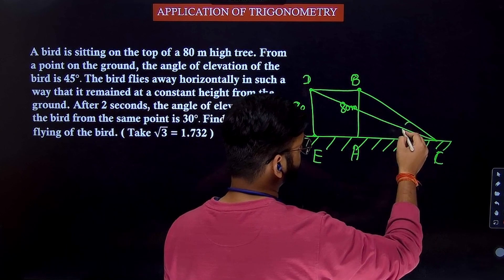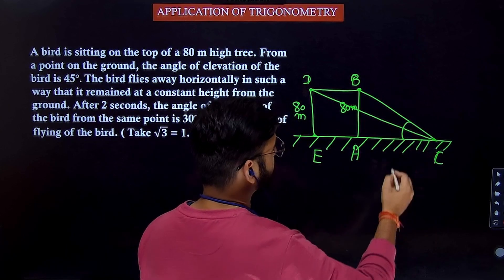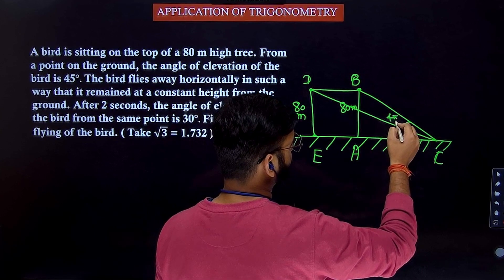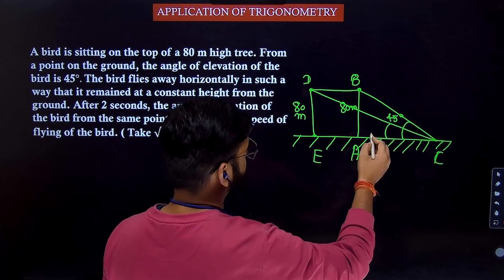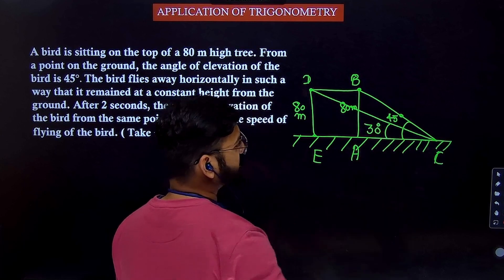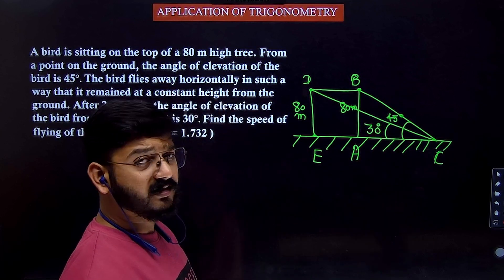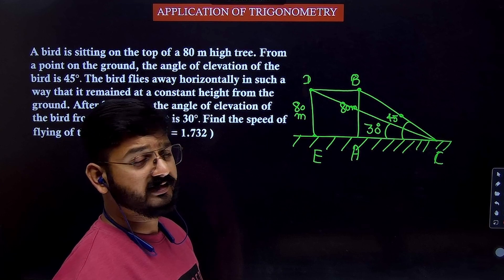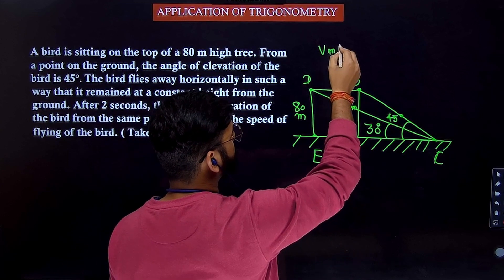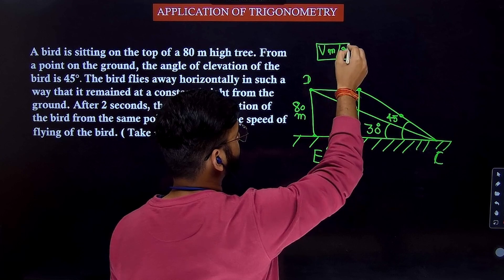Now you are observing the new position of the bird from the same point of observation which is point C. So what is the angle of elevation? In the start it is 45 degrees. Now what is the angle of elevation? In the second situation it is 30 degrees. So you can assume that the bird is moving with a uniform velocity V meter per second.